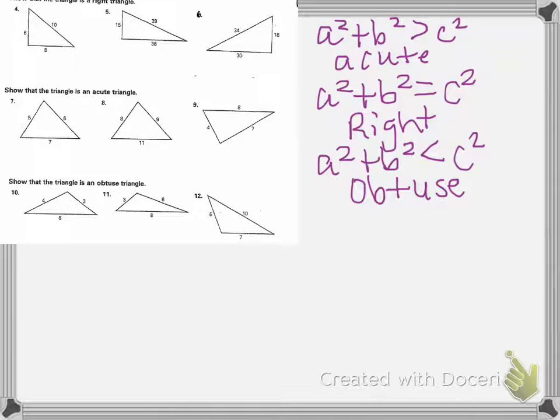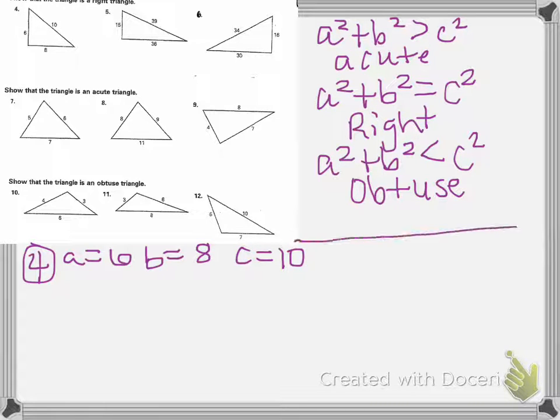So we're going to look at number 4. Number 4, our A is 6, our B is 8, and our C is 10. So we're going to write our formula over here: A squared plus B squared, and we don't know what our sign is, C squared.